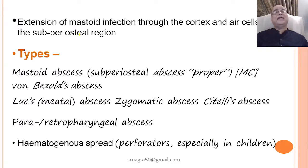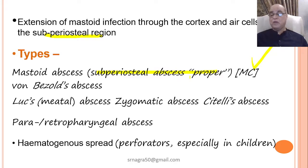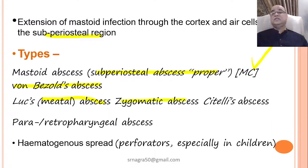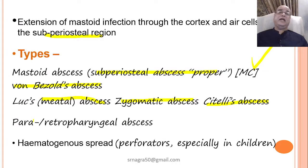If not treated, or if infection is more severe, it can extend through the cortex and air cells of the mastoid air cell system into the subperiosteal region, leading to mastoid abscess or subperiosteal abscess — the most common outcome of mastoiditis. There can also be Bezold's abscess, meatal or luce abscess with pus collection in the external auditory canal, zygomatic abscess with pus along the zygomatic arch, Citelli's abscess with pus along the posterior belly of the digastric muscle, or extension to the parapharyngeal or retropharyngeal space. Hematogenous spread can lead to distant foci of thrombus, especially in children, but this is rare.